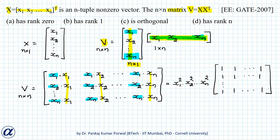This is an n by n matrix which has identical rows and columns. Therefore there is only one linearly independent row and one linearly independent column, so the rank of this matrix is just 1. Hence option B is correct.